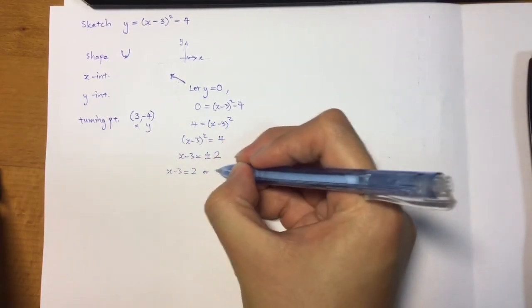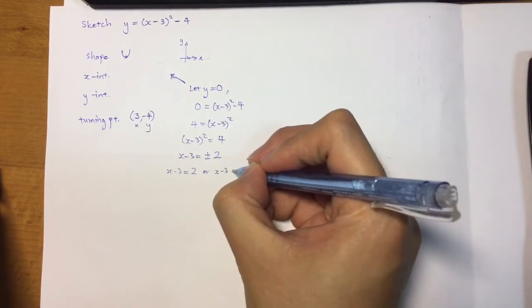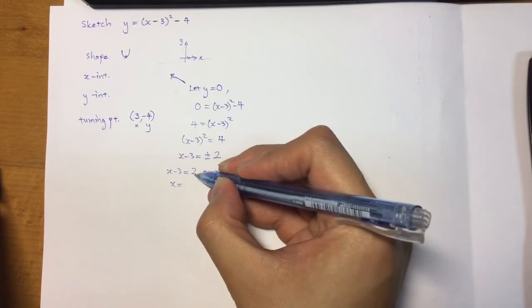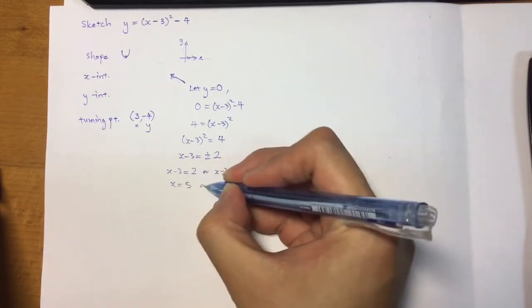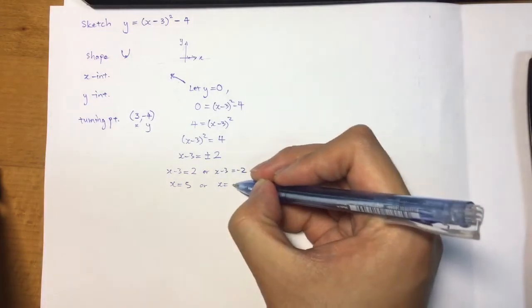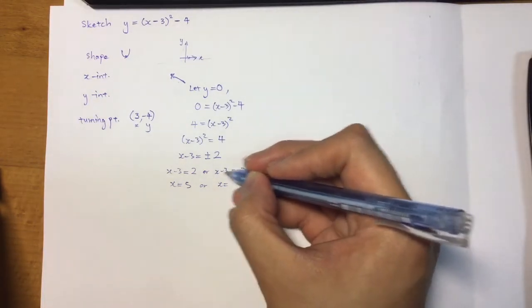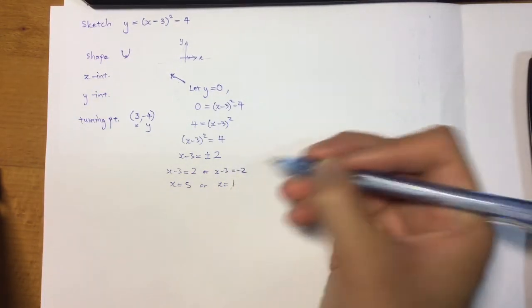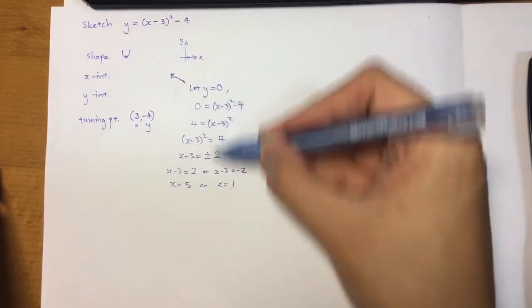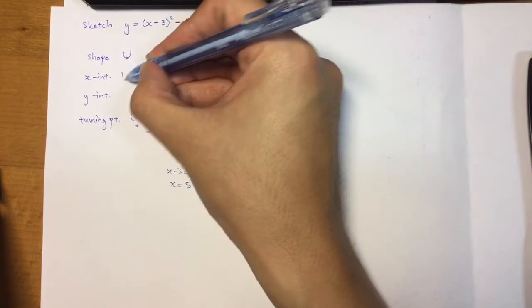I have the positive 2 or I have the negative 2. So I proceed to solve as an equation as per normal. I have 2 plus 3, I have 5. Or x taking on the value of negative 2 plus 3. So I will have negative 2 plus 3, I will have positive 1. So my x-intercepts are the values here of solving this equation, which are 1 or 5.